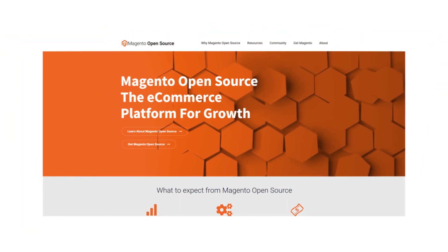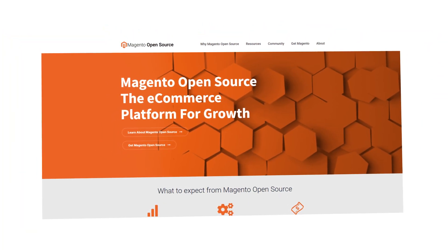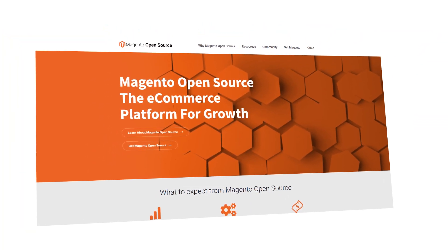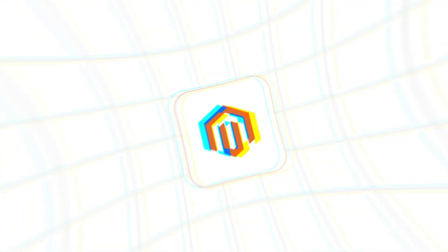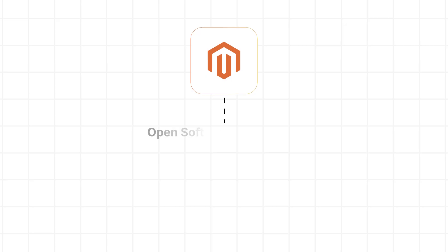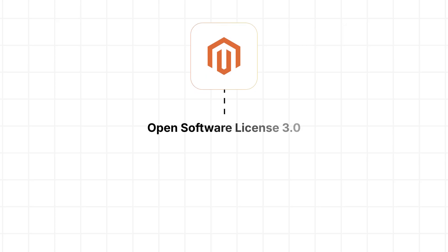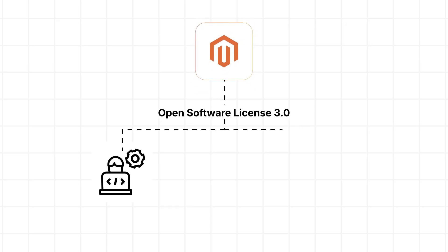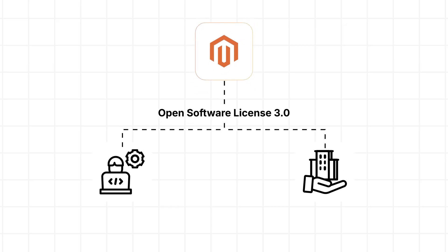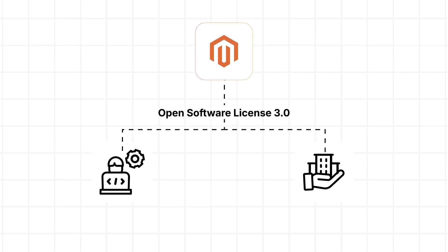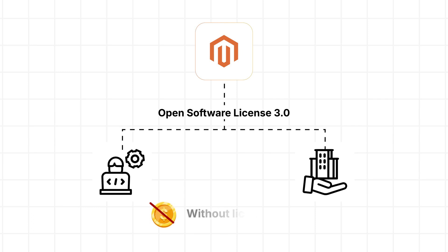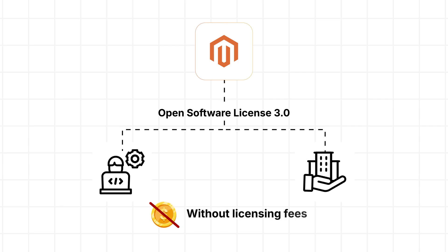First, let's look at what Magento 2 Open Source is. Magento Open Source is distributed under the Open Software License 3.0, allowing developers and businesses to use, modify, and distribute the software without licensing fees.